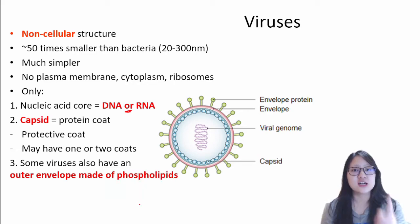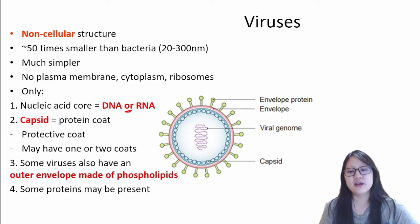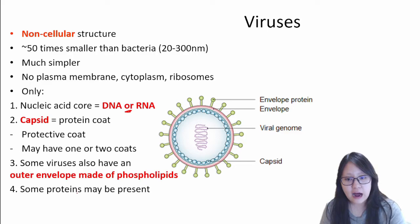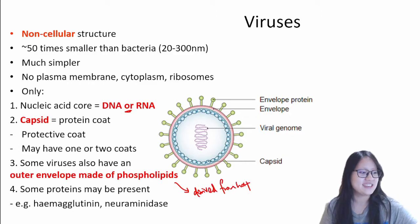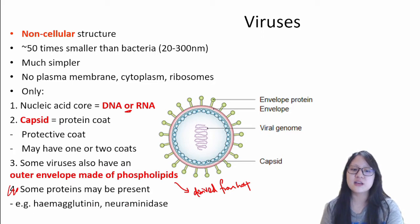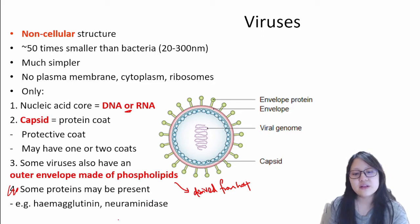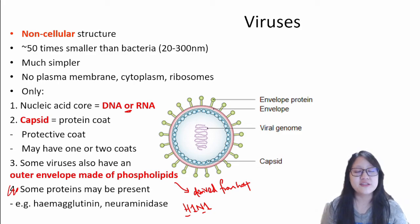But this is not considered a cell surface membrane — it is a viral envelope. Why? Because this outer envelope is derived from the host; it is not from itself. Some proteins may be present at this outer envelope, for example hemagglutinin and neuraminidase. You don't need to remember this, but fun fact: when we talk about H1N1, that's what H and N stand for — they're types of proteins on the outer viral envelope.